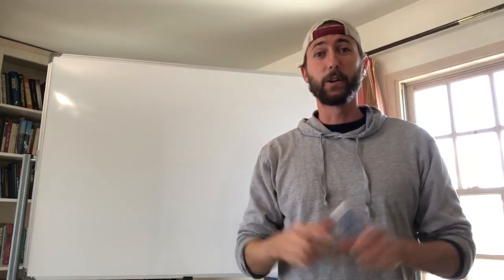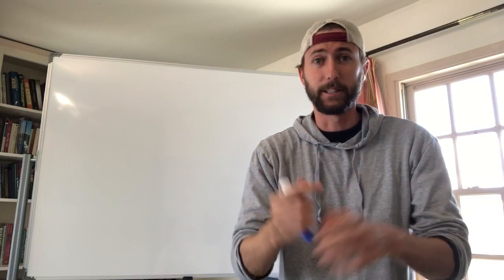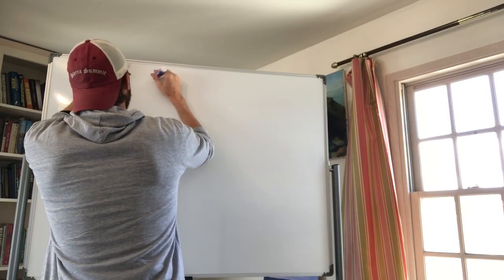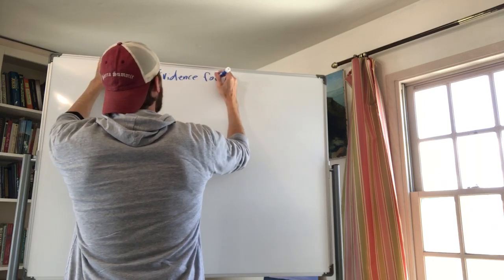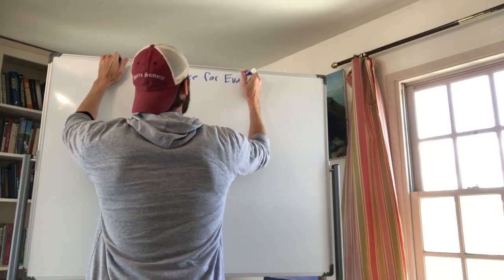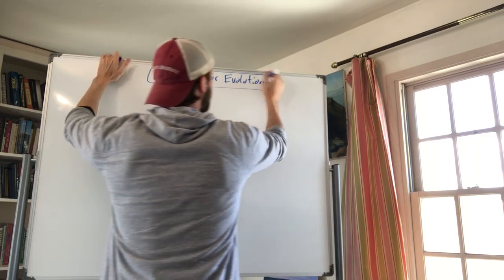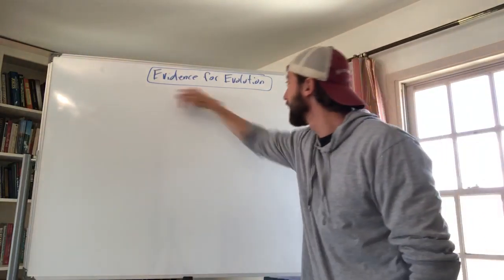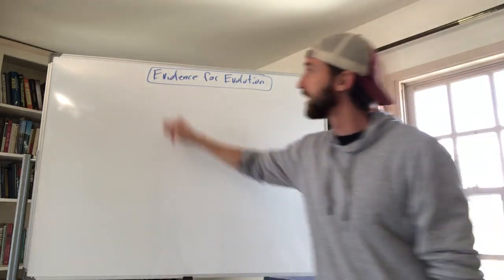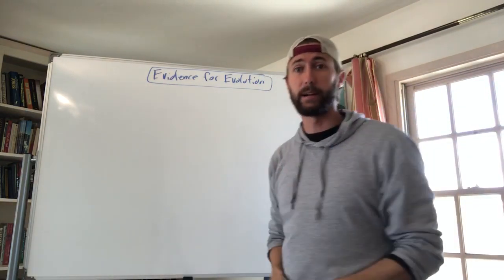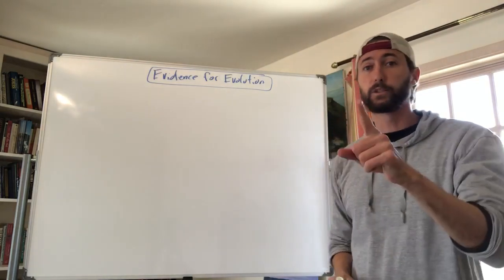Rick is here with another video, this time about the evidence for evolution. If you guys remember last video, we talked about what evolution is and how it occurs — evolution and natural selection. Today we're talking about the evidence for evolution: how do we know this crazy theory is true? It's because there's a whole lot of evidence, and we're going to talk about four different lines of evidence.